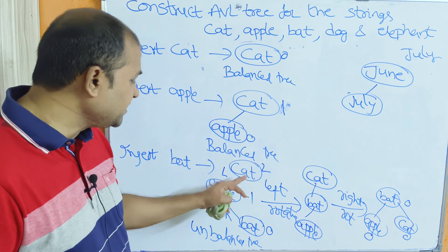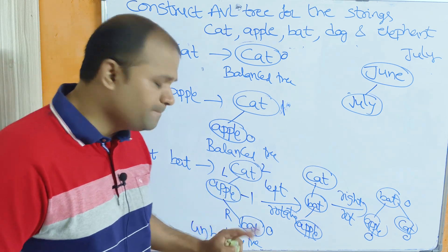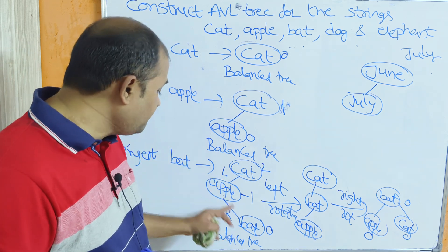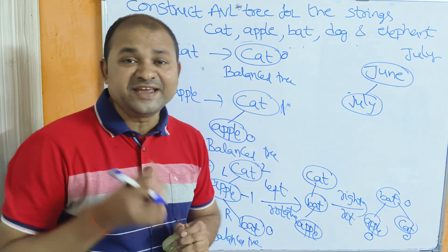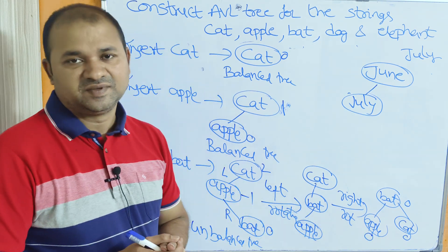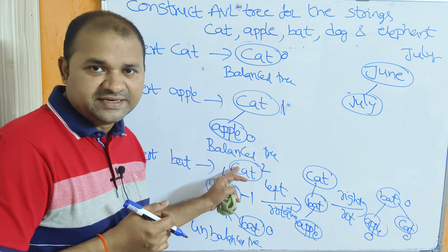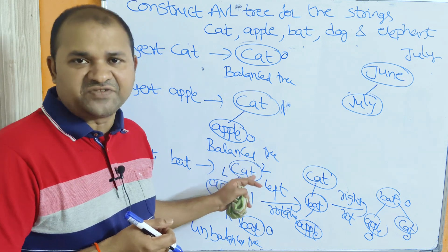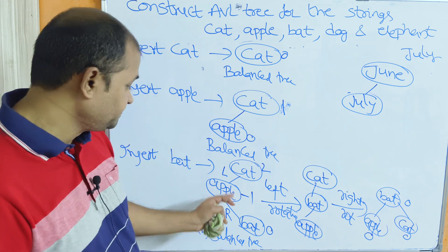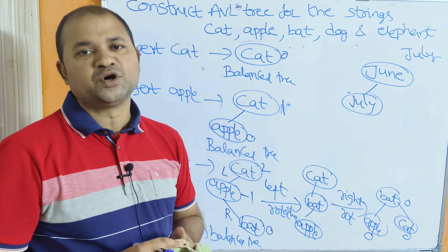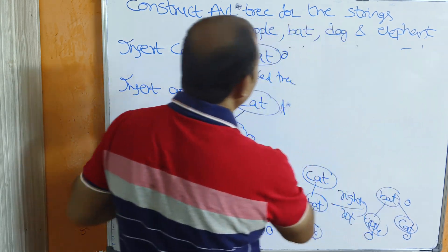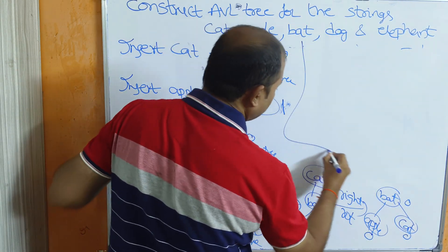There is also a shortcut: for the nodes cat, apple, bat — comparing alphabetically, 'a' is smallest so apple is the left child, 'c' is largest so cat is the right child, and 'b' is the intermediate value so bat becomes the root node.